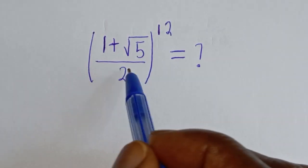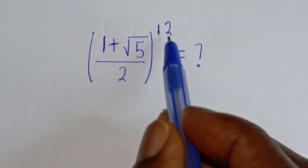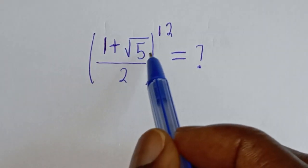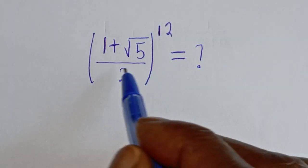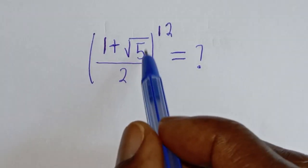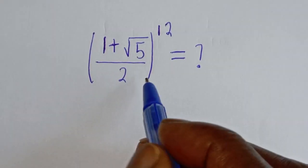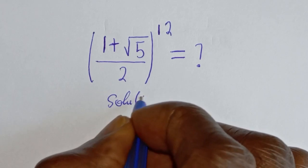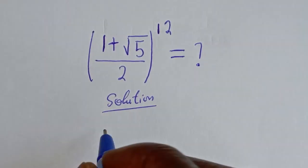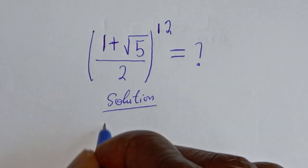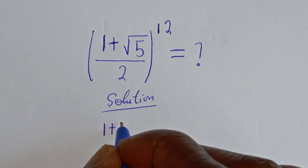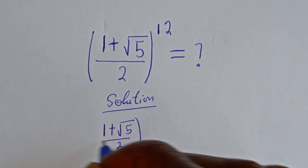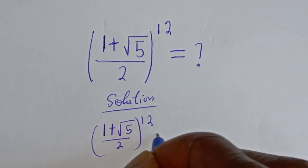What is (1 plus square root of 5) over 2, to the power of 12? Hi everyone, welcome to my class. In this class we want to simplify this nice math problem.